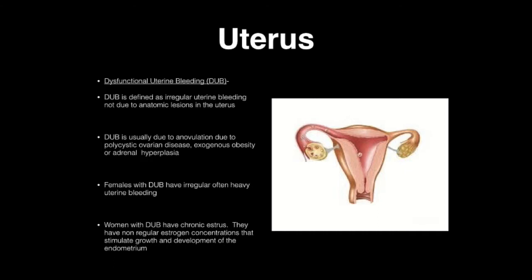Dysfunctional uterine bleeding is defined as irregular uterine bleeding not due to anatomic lesions in the uterus, so the patient cannot have any fibroids or any sort of malignancy. A key component to remember is that dysfunctional uterine bleeding is usually due to anovulation, due to polycystic ovarian disease, exogenous obesity, or adrenal or congenital adrenal hyperplasia.